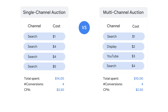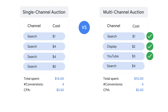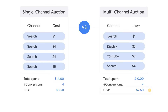Then your search campaign might find one more conversion for $5 while your Performance Max campaign can find that second search conversion for $4. The result is that in the single-channel auction, your search campaign would have spent $14 for four conversions with a cost per action of $3.50. But in Performance Max, thanks to cross-channel bidding, you were able to find conversions on multiple channels at a lower marginal CPA, ending up spending $10 for four conversions with a cost per action of $2.50, which was lower than in the search campaign.